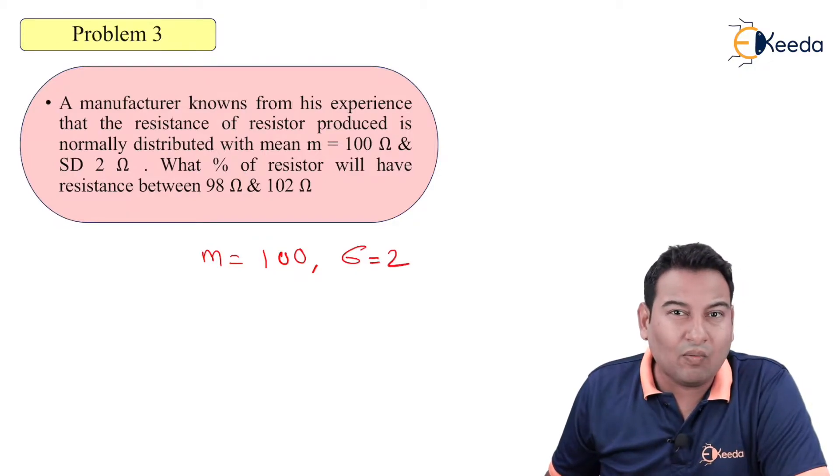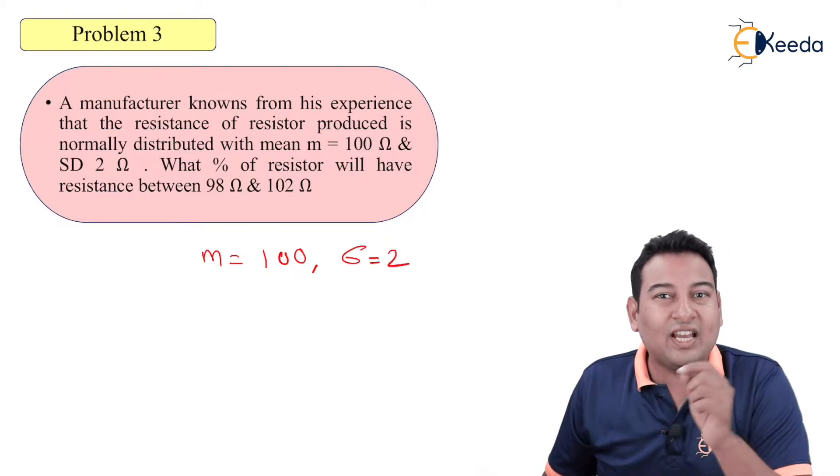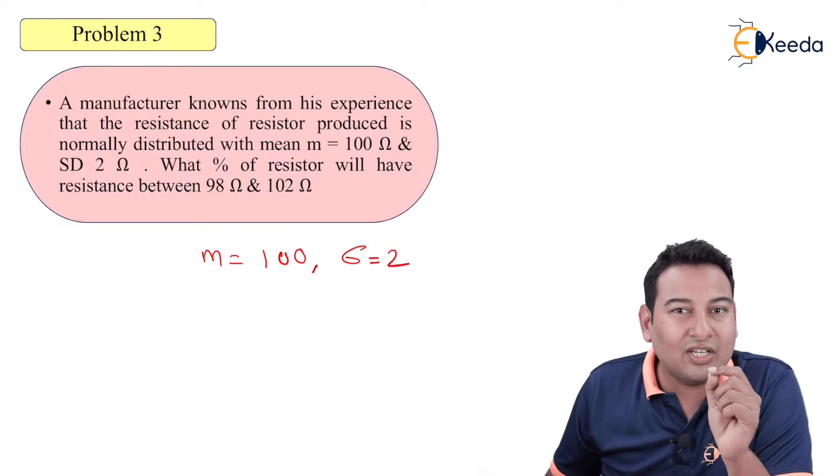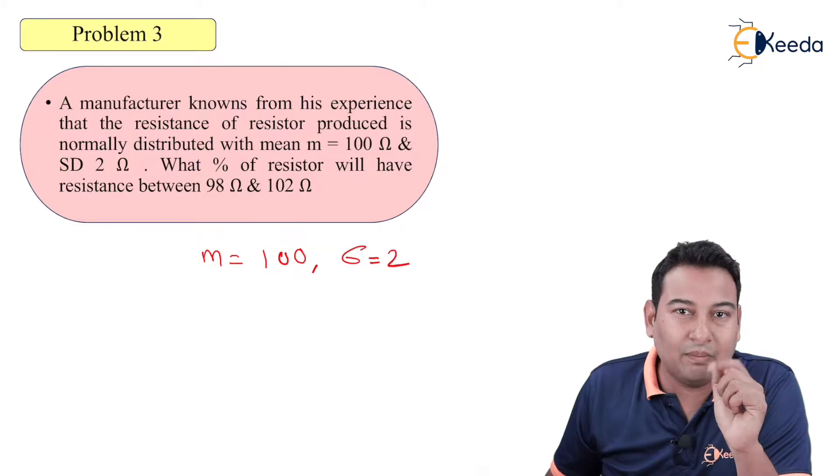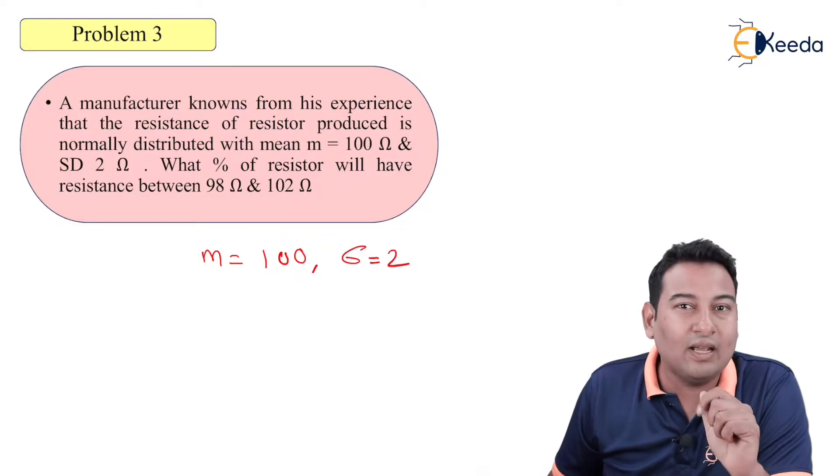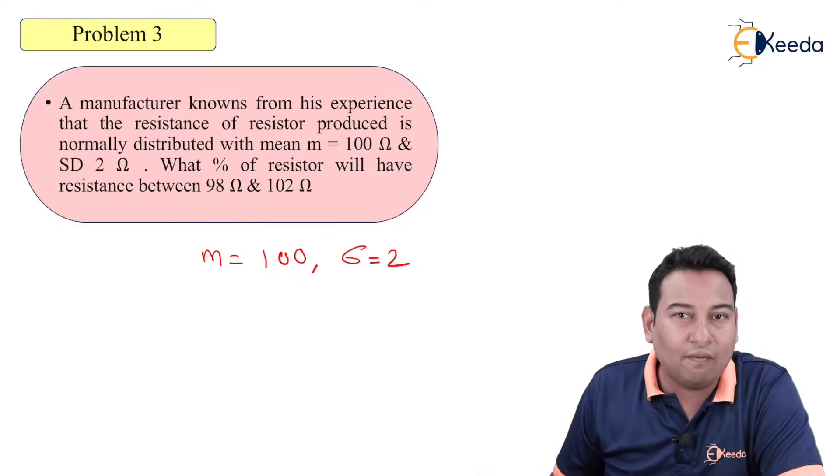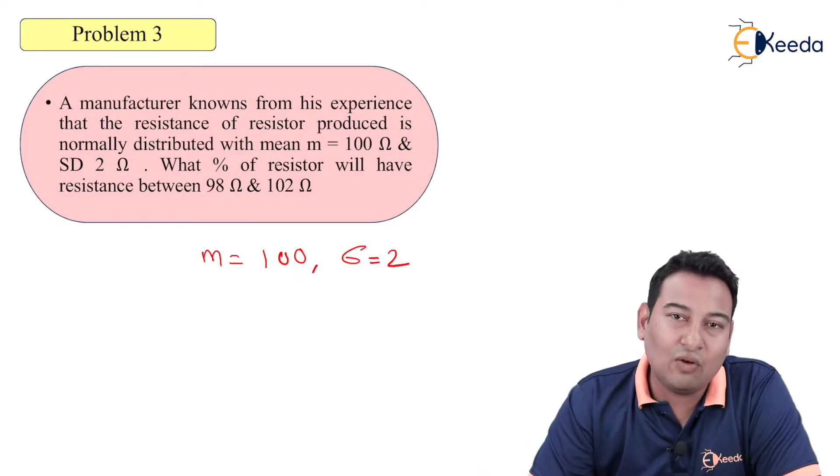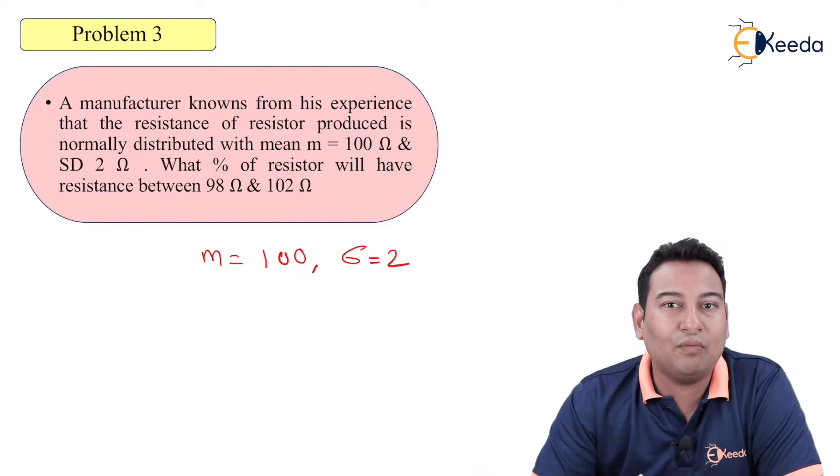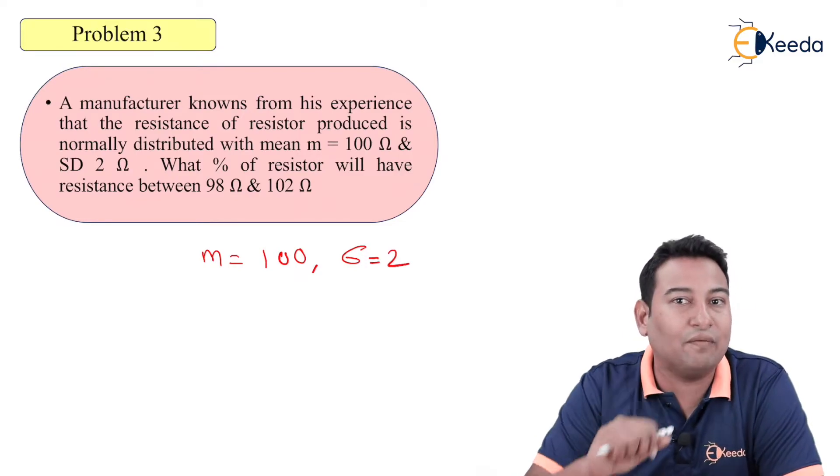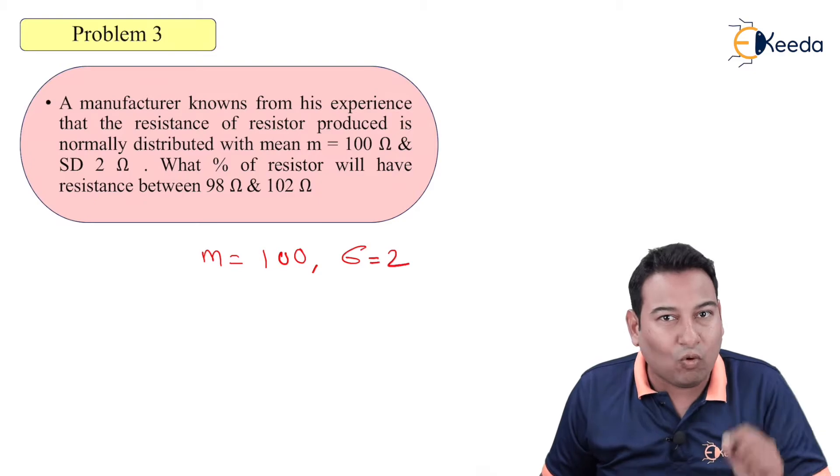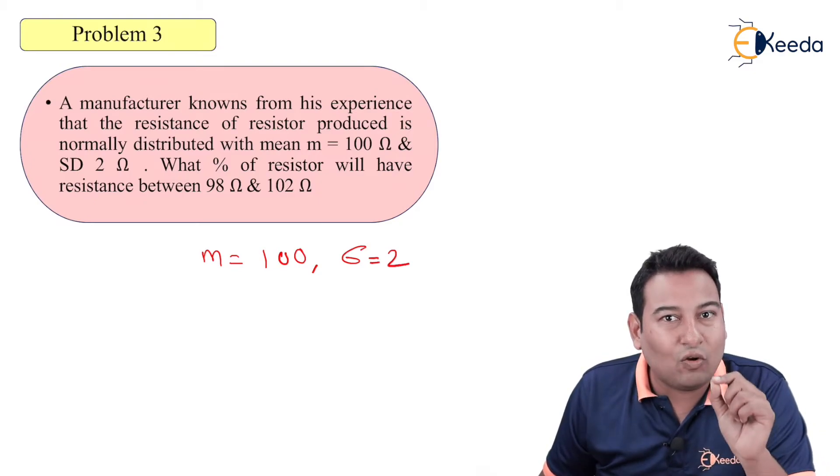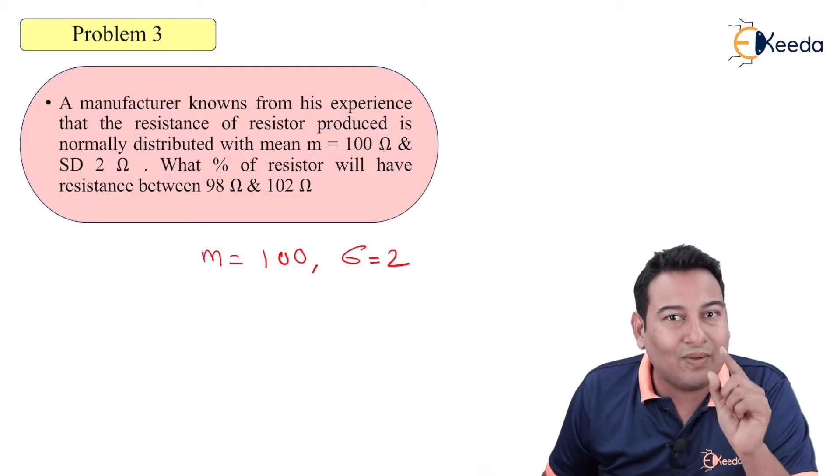Friends, always remember what is x. Whichever mean and standard deviation is given, that is x. Please make a note of this particular point because this point is very helpful while distinguishing between type 1 and type 2. Right now we are into type 1, but when we move on to type 2 you might be confused. Always remember, whichever quantity mean and SD is given, that is x.